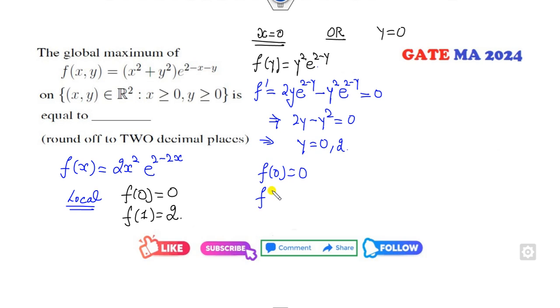So the solution will be y equals zero and y equals 2. When y equals zero, the answer is zero. When y equals 2, the answer will be 4.